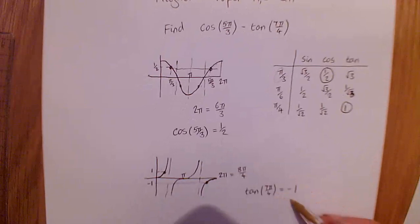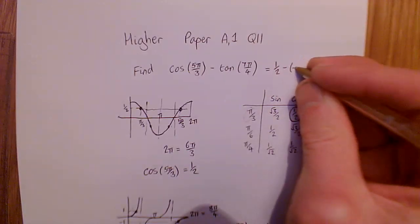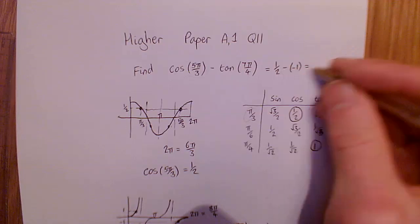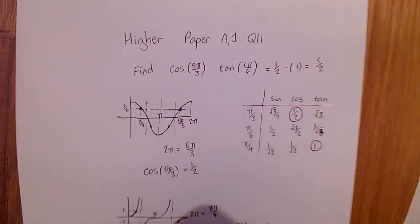With those two values of a half and minus 1, we can plug them in. So this becomes a half minus minus 1. Half minus minus 1 is 3/2.